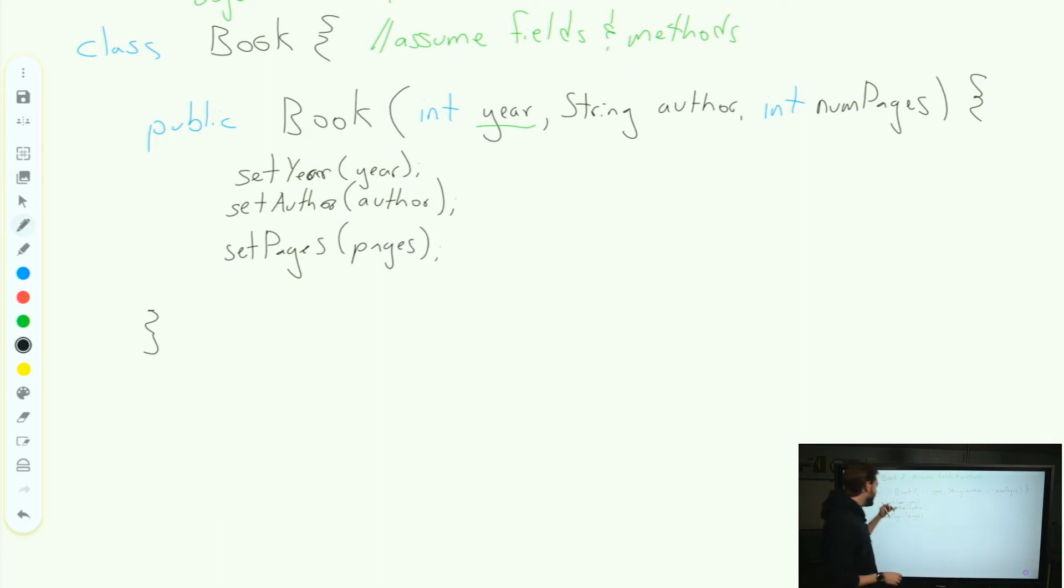Again, in this case, I am assuming that I have all of these mutators properly set up, and I'm passing in the correct parameters for each of these methods within my constructor. This is my initial constructor that takes in the parameters.